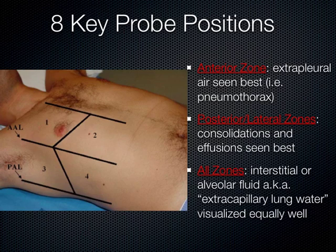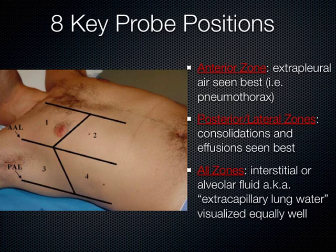Anteriorly is the best place to look for pneumothorax — if you're supine and air has escaped into the pleural space, it will be anterior. Posterolaterally, we can best see effusions (fluid in the pleural space) and consolidations (pneumonias or atelectasis) because those are gravity dependent. In all zones you can appreciate pulmonary edema, which is generally bilateral in most cases due to congestive heart failure or non-cardiogenic pulmonary edema, and should be visible in multiple fields.